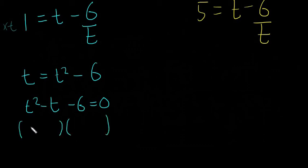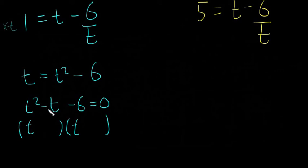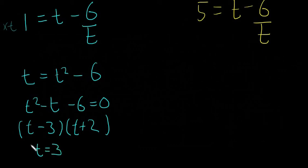Factorising t squared minus t minus 6: we use factors minus 3 and plus 2, since minus 3 times plus 2 equals minus 6, and minus 3 plus 2 equals minus 1 (the coefficient of t). So (t minus 3)(t plus 2) equals 0, giving t equals 3 or t equals minus 2.